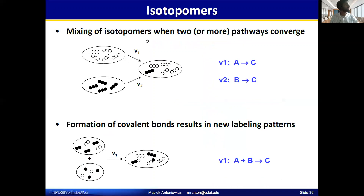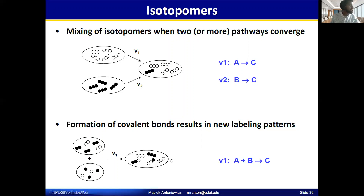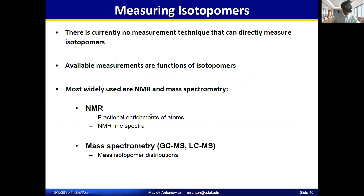Isotopomers can be mixed in different ways. When two pathways enter a common metabolite, you could have one pathway exclusively in one labeling form and another in a different form, and they simply mix. Or when reactions take place — and this is really the key utility of 13C labeling — covalent bonds form resulting in specific patterns or fingerprints, where the ratios of different isotopomer species can indicate different fluxes.